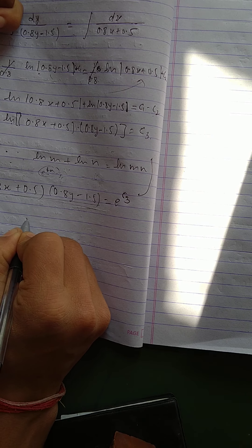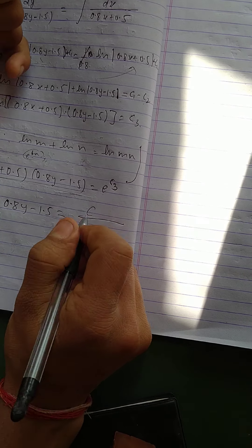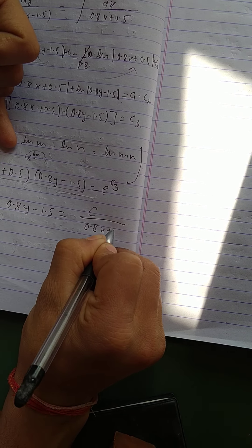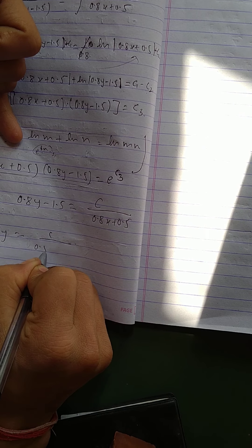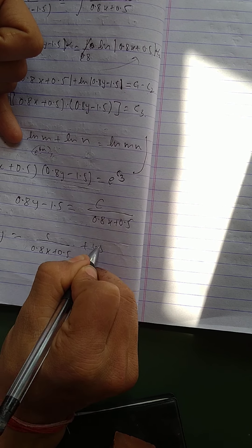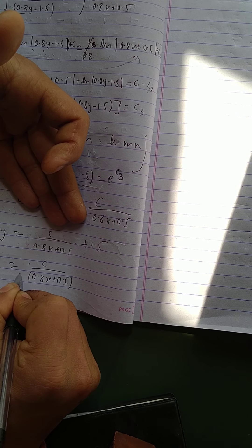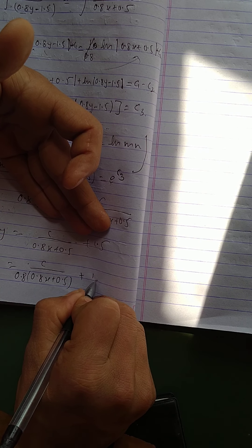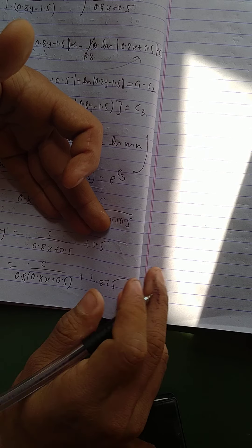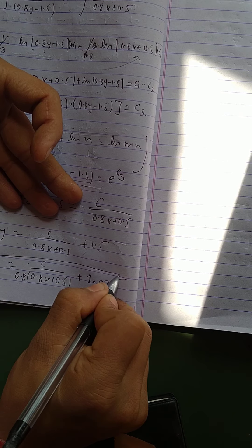Now we will write in the form of 0.8y minus 1.5 equals, let's assume it as a constant c, divided by 0.8x plus 0.5. Or 0.8y equals c by 0.8x plus 0.5 plus 1.5, and it will give y equals c divided by 0.8x plus 0.5 times 0.8 plus 1.5 divided by 0.8, which gives 1.875. So this is the expression in terms of y.